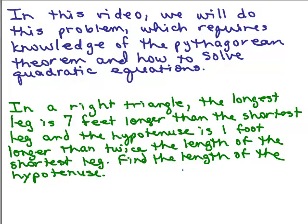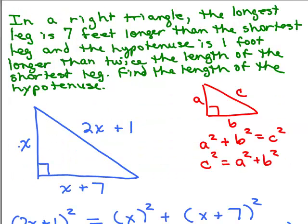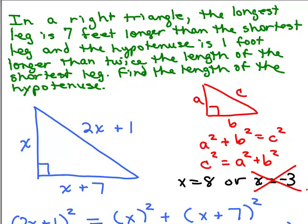We came out with two possible solutions for x: x equals 8 or x equals negative 3. But looking at the picture, you can't have a side with a negative length, so negative 3 doesn't make sense and we can't use it. So the question is: can we plug in 8 for x?